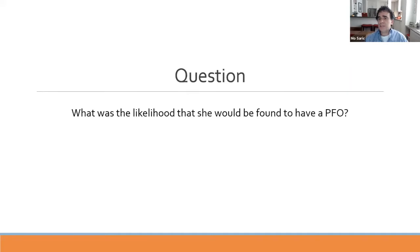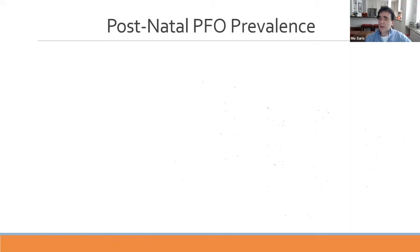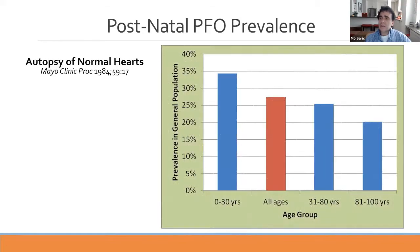What was the likelihood she would be found to have a patent foramen ovale? Based on the incidence of postnatal PFO at autopsy of normal hearts across all ages, the prevalence of patent foramen ovale in the general population is about 25 to 30%.